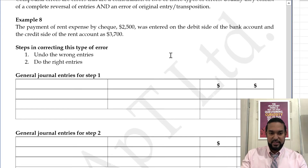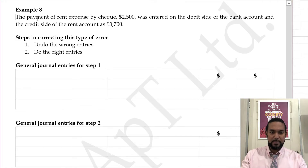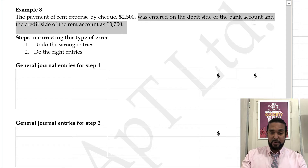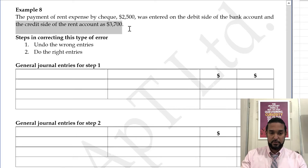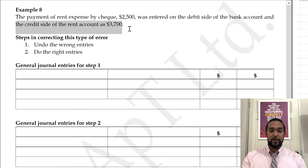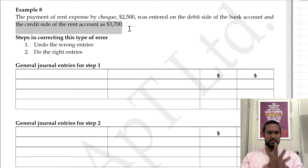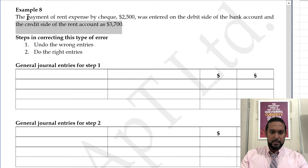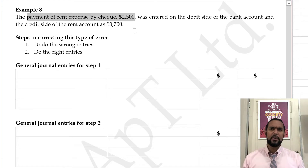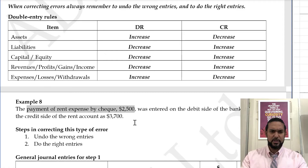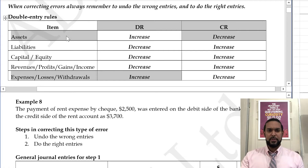Let's take a look at the example. We have a payment of rent expense by check, and it was entered on the debit side of bank and credit side of rent account as 3,700. So we have two things that went wrong there. The payment of rent expense by check — let's go up to the double entry rules and see what was supposed to have been debited and what was supposed to have been credited.